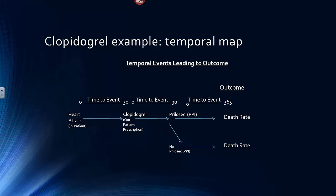Let's develop a temporal mind map about this situation. First, you start out with a heart attack. Then after the heart attack, within 0 to 30 days, you're started as an outpatient on clopidogrel. Then one of two things happens: within 0 to 900 days, you're either started on Prilosec or you're not. That defines two populations — one with heart attack, clopidogrel, and Prilosec (where Prilosec potentially interferes with clopidogrel), and the other with heart attack and clopidogrel but no Prilosec.